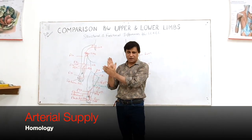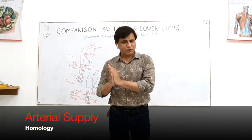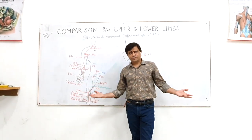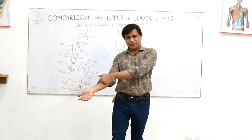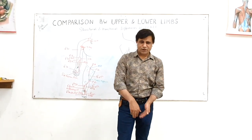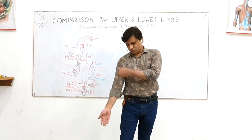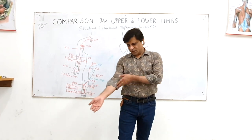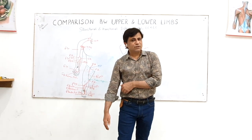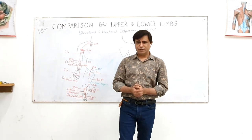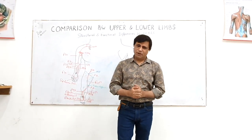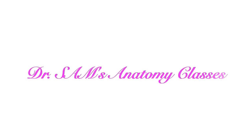Everything on the post-axial side — lateral plantar artery — is the same as ulnar artery and superficial palmar arch. There are many things to compare; just keep the idea of pre-axial and post-axial borders: what is lateral in the upper limb will be medial in the lower limb, and what is medial in the upper limb will correspond to the lateral side in the lower limb. This lecture is running long so we'll continue next time.